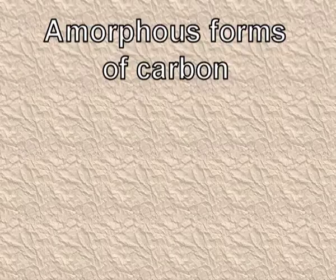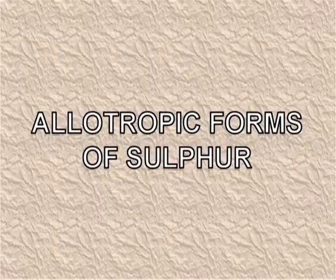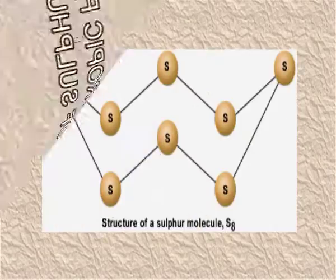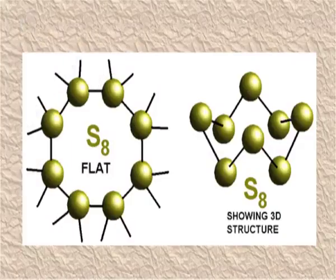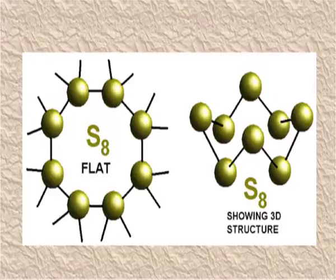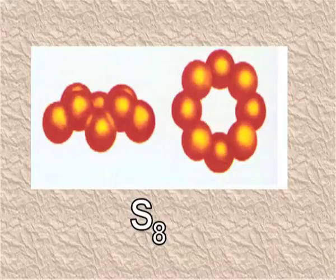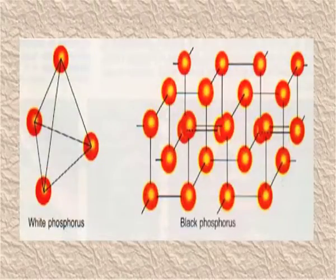The amorphous forms of carbon include carbon black, coke, and charcoal. Allotropic forms of sulfur: the sulfur molecule is S8, a crown-shaped puckered ring, and these sulfur rings arrange differently to form orthorhombic and monoclinic sulfur. The allotropes of phosphorus are red phosphorus, black phosphorus, and white phosphorus.